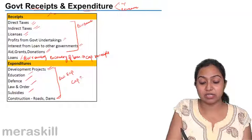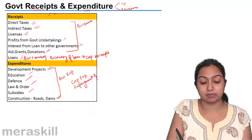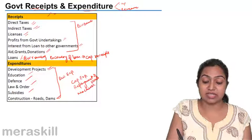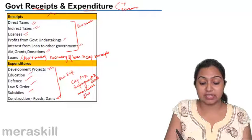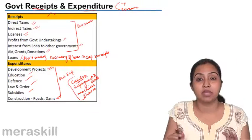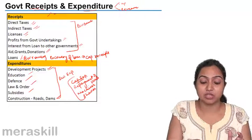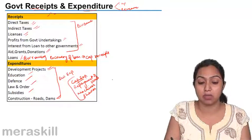And what are the capital expenditures? Capital expenditures are the repayment of loans, interest payments, purchase of machineries, long-term assets that are created, buying of machinery, and buying of equity shares. These are all capital expenditures of the government. So, we have broadly understood what the government receipts and government expenditures are, and how it makes its budget — we'll talk about this.